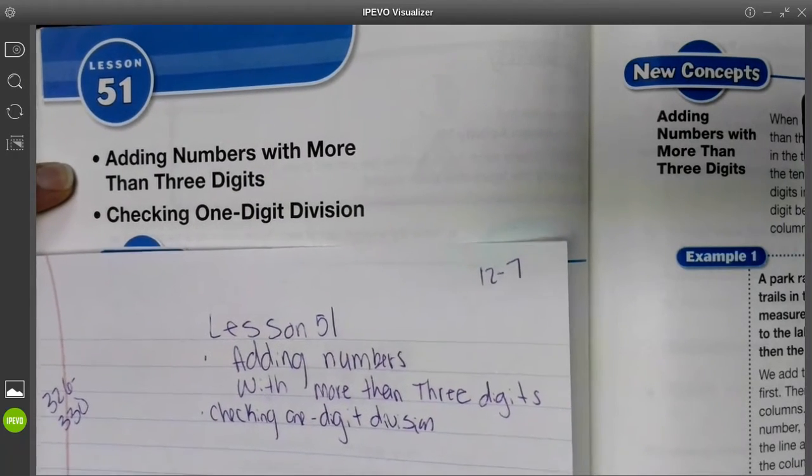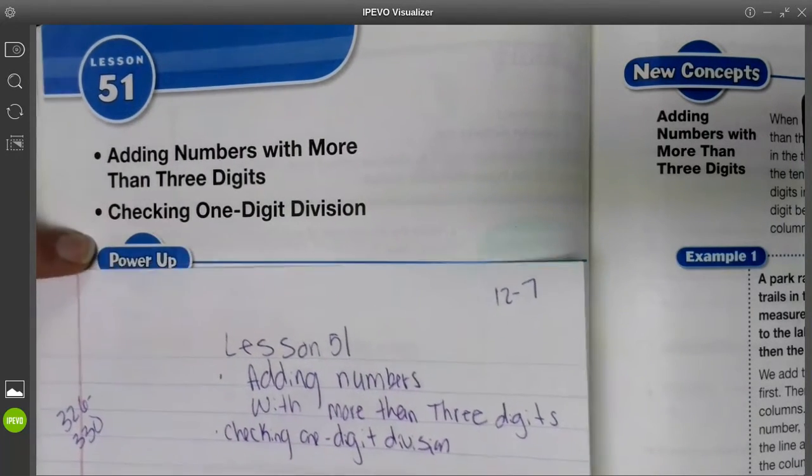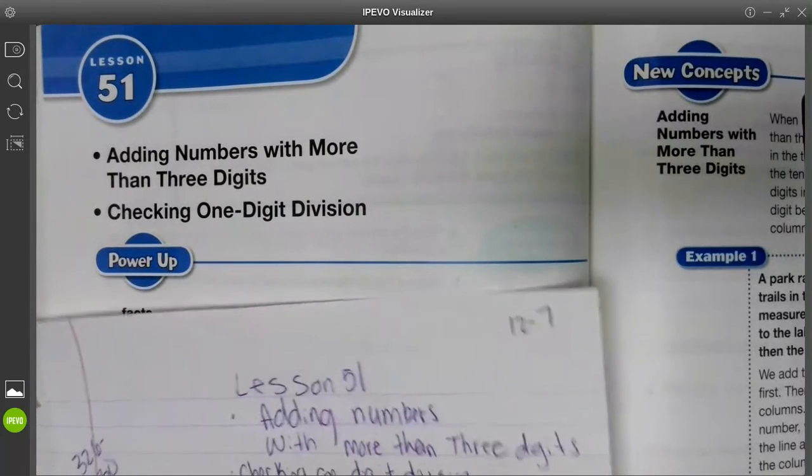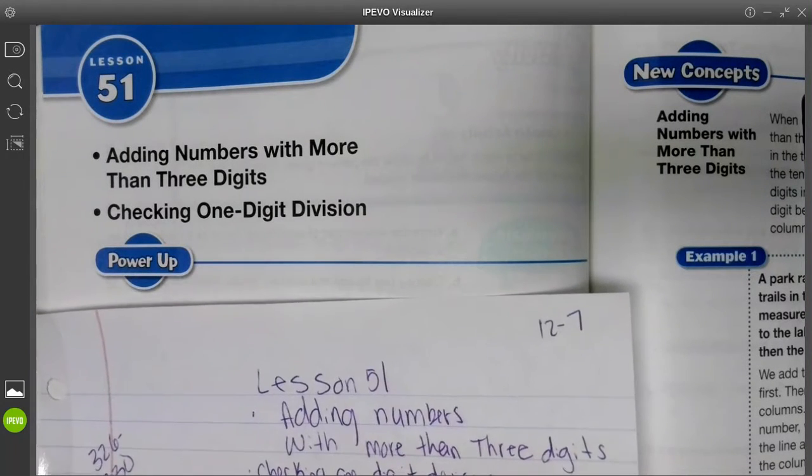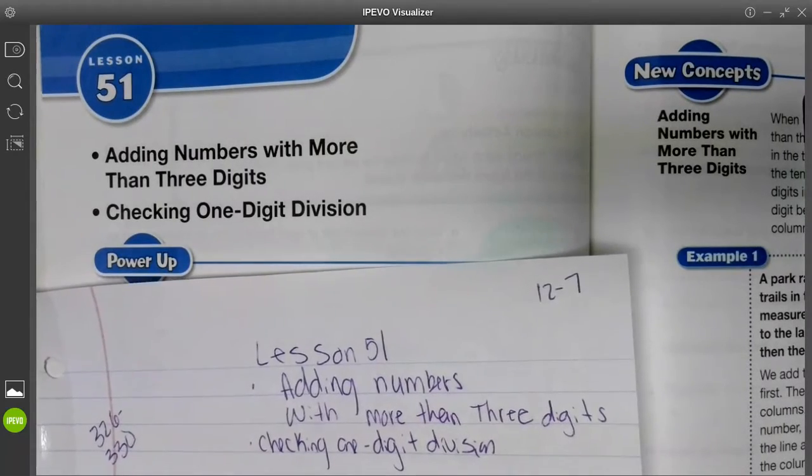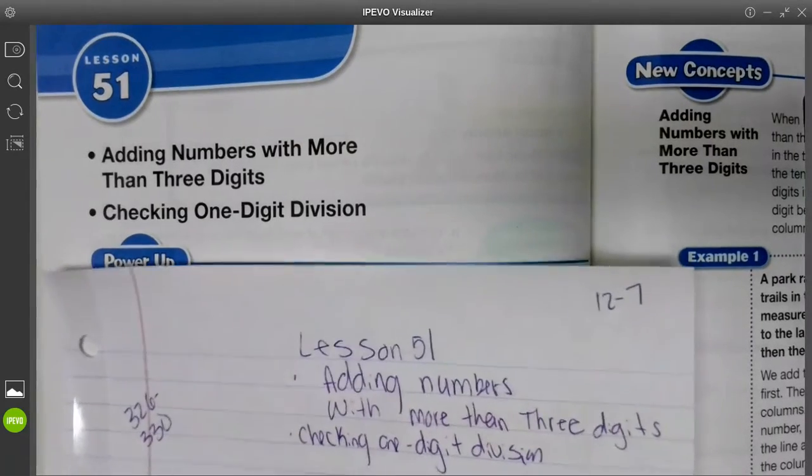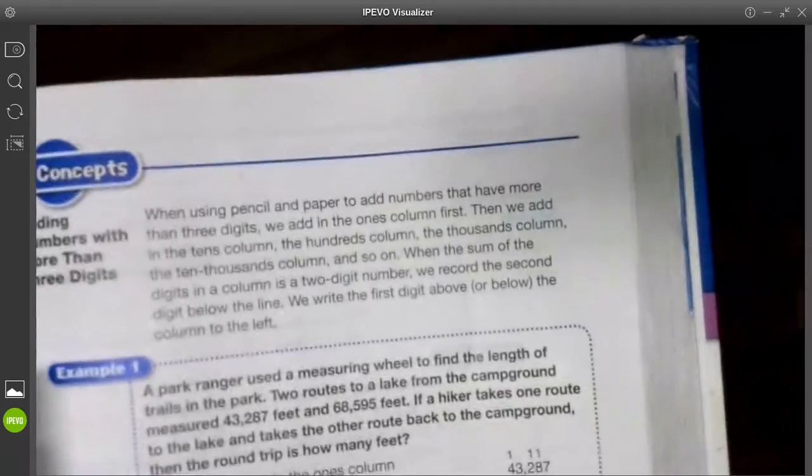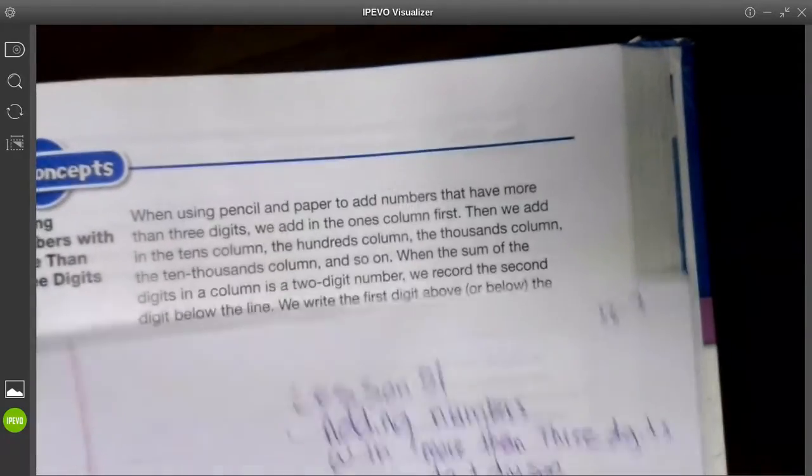It's also right here in the book. There are two parts to today's math lesson. You're adding numbers with more than three digits, and then we're checking one-digit division. Checking is very important. We talked about this in other areas as well, but it's important to check in division to make sure answers make sense.